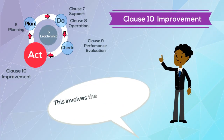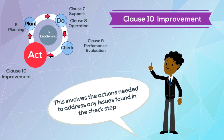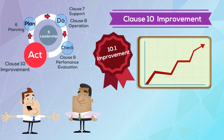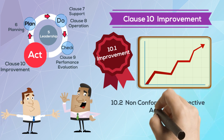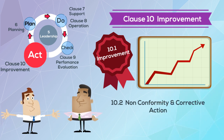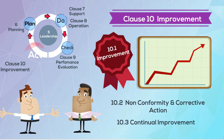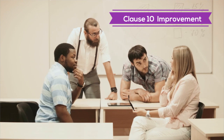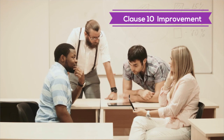This involves the actions needed to address any issues found in the check step. Improvement is the overall heading for these action steps, with the activities of addressing non-conformity and corrective actions to eliminate the causes of actual or potential non-conformities as the first step in acting to improve the system. The goal of a QMS is to work toward improvement for the company, because only through improvement will a company be able to compete in industries that are growing ever more competitive.